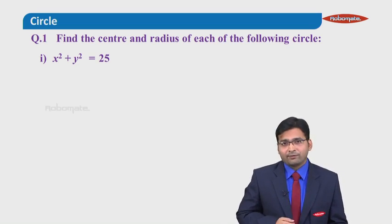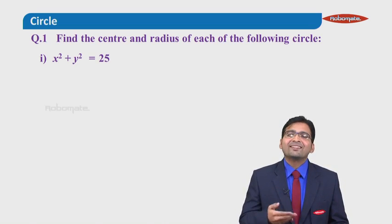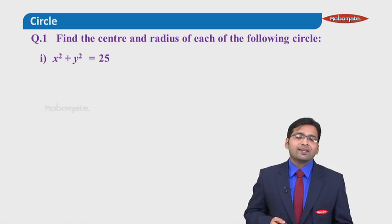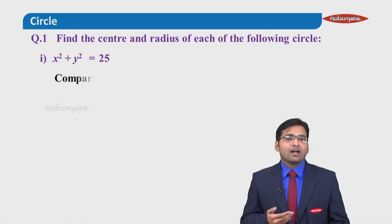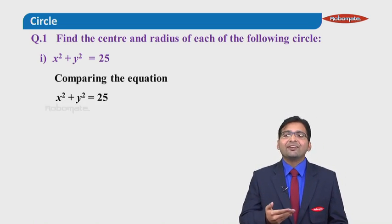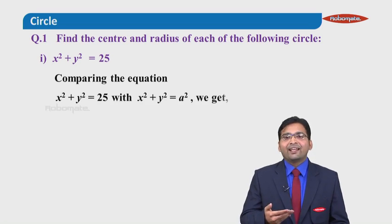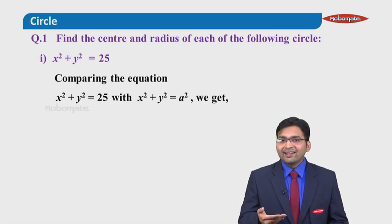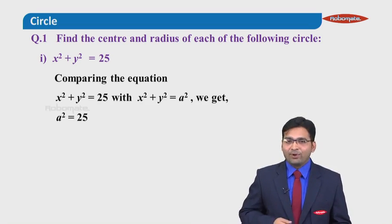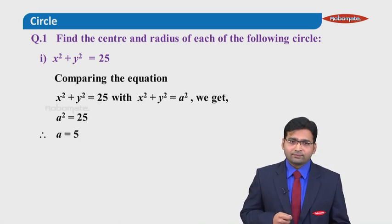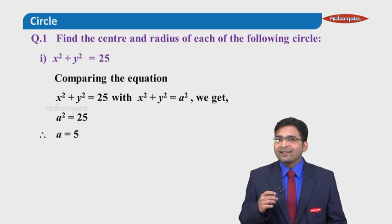Everyone must have realized that this is Type 1, that is a standard circle. For a standard circle, the first step is comparison — comparing the given equation with x squared plus y squared equals a squared. We get a squared equals 25.